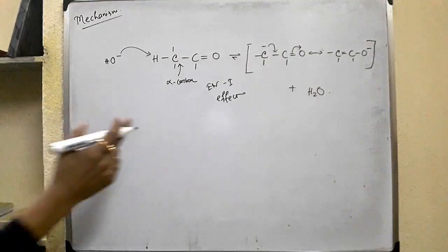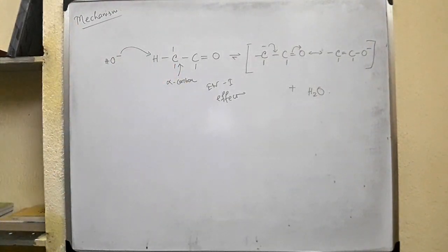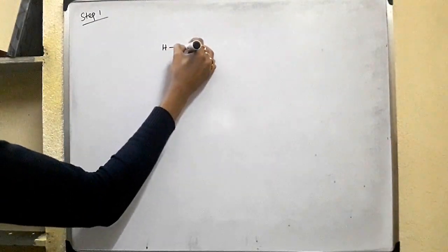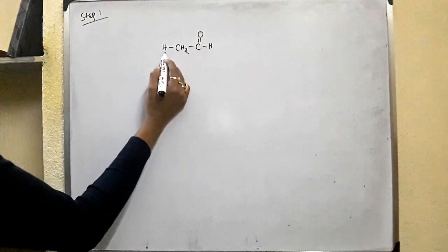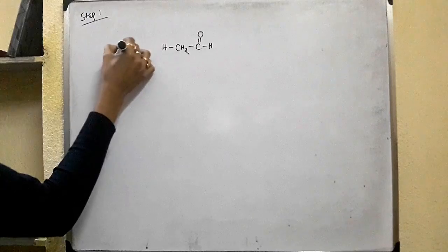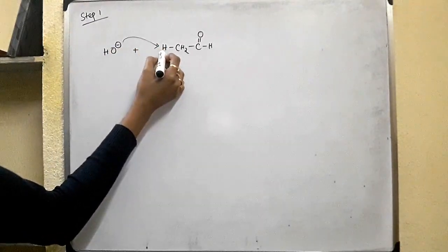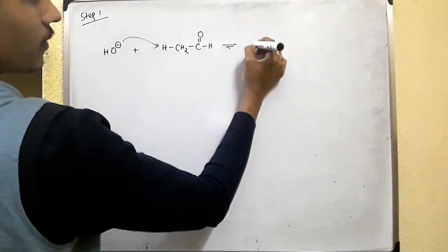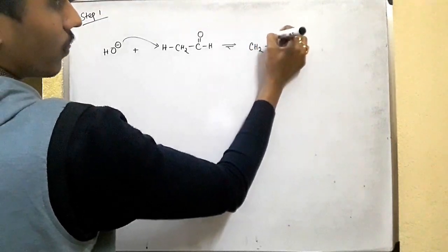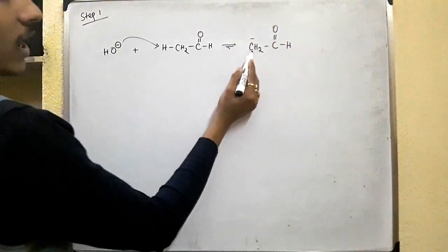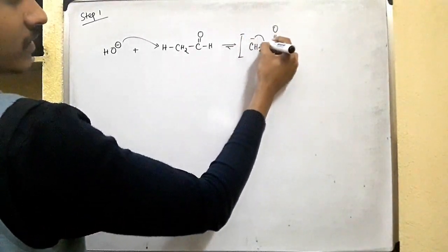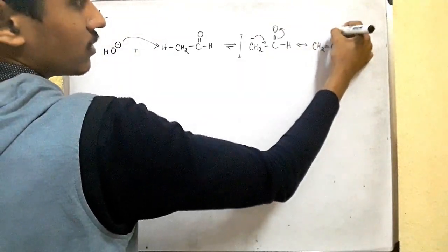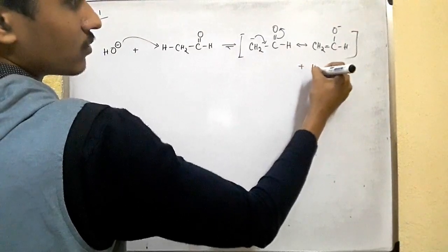This enolate ion is the conjugate base of the carbonyl compound. So, step 1: taking an alpha-hydrogen containing aldehyde — acetaldehyde — OH⁻ removes one of the alpha-hydrogen atoms, leading to the formation of a resonance-stabilized enolate ion. As the hydrogen is removed, the carbon gets a negative charge; this negative charge drops and the bond shifts, giving us the resonance-stabilized enolate ion plus water.